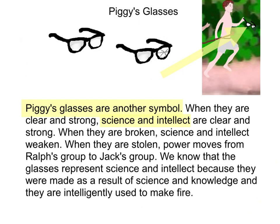Piggy's glasses are another symbol. When they are clear and strong, science and intellect are clear and strong. When they are broken, science and intellect weaken. When they are stolen, power moves from Ralph's group to Jack's group. We know the glasses represent science and intellect because they were made as a result of science and knowledge, and they are intelligently used to make fire.